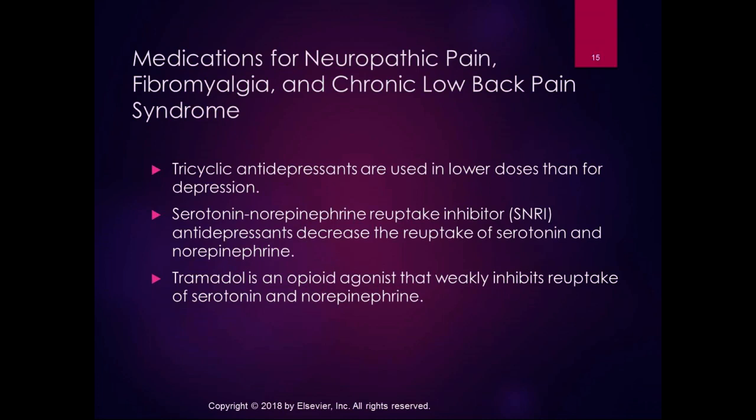For fibromyalgia and chronic low back pain, medications are sometimes used, and exercise has been shown to be an effective treatment — something we as therapists can prescribe. Medications require a doctor. Tricyclic antidepressants are used in lower doses than for depression. Serotonin-norepinephrine reuptake inhibitors, which are also antidepressants, are sometimes used. Tramadol is an opioid agonist — it binds to opioid receptors even though it's not an opioid itself — and it weakly inhibits the reuptake of serotonin and norepinephrine. A lot of people with fibromyalgia have given up on medications because they're not getting relief from them, so they're looking for another answer.